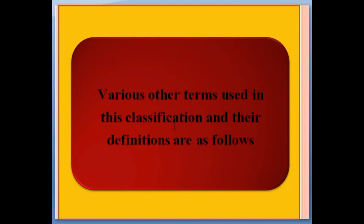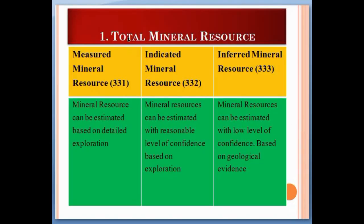Apart from the three axes, there are other classification terms. Total mineral resources consist of: measured mineral resources with code 331, indicated mineral resources with code 332, and inferred mineral resources with code 333. Measured mineral resources can be estimated based on detailed explorations and analysis. Indicated mineral resources can be estimated with a reasonable level of confidence based on explorations, while inferred mineral resources can be estimated with a low level of confidence based on geologic evidence. Code 331 is the highest category in total mineral resources.